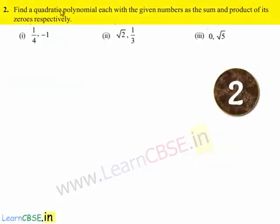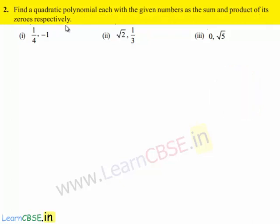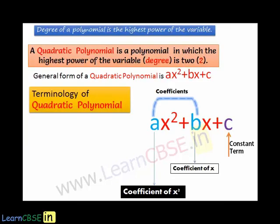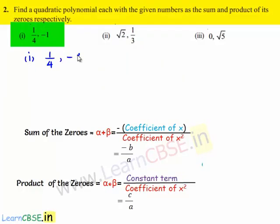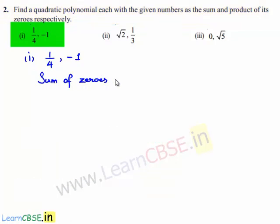Coming to the second problem: find a quadratic polynomial with the given numbers as the product and sum of its zeros respectively. For the first one, the sum of the zeros is equal to 1/4 and the product is equal to -1.